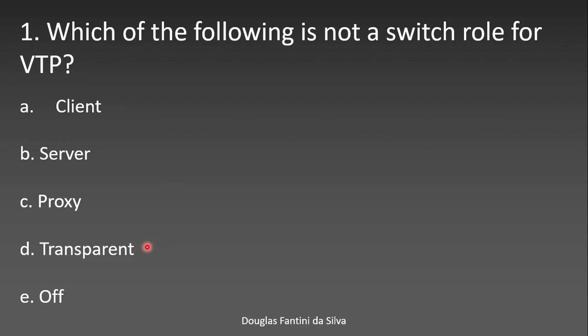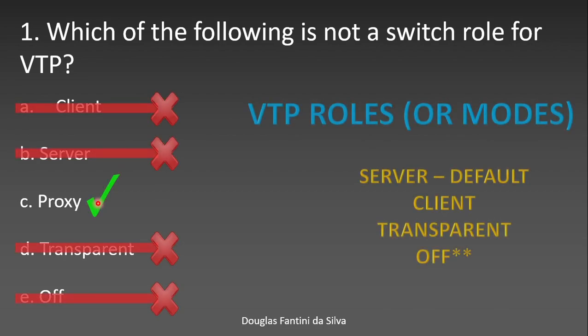There is also the transparent mode, where you receive VTP information normally but you're not participating in the VTP domain. And there is the off mode where the protocol is completely turned off. The answer that has nothing to do with VTP is 'proxy' — proxy is not a switch role for VTP.